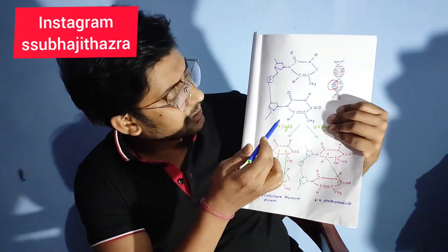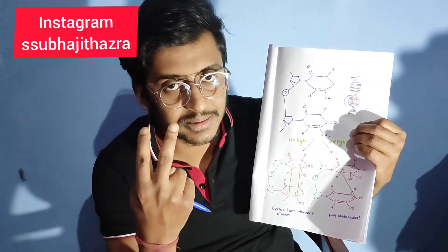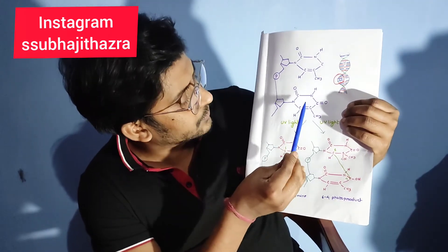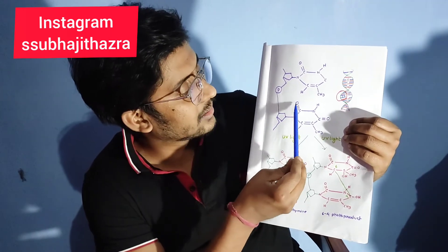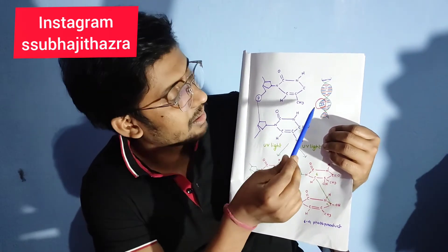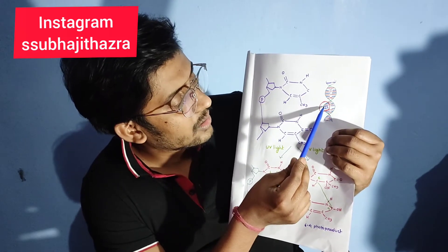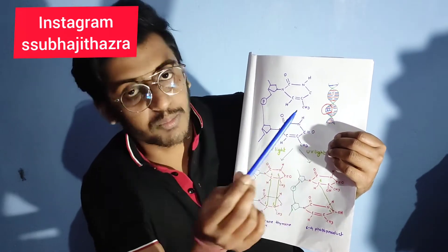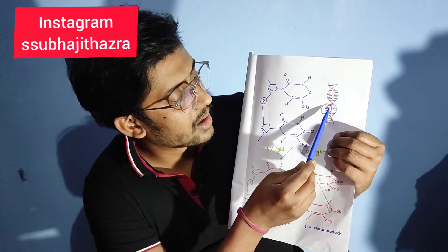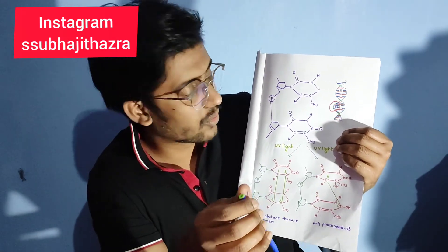This is the two-thymine structure. Because there are two pyrimidines — one is thymine and another is cytosine — as you can see in the structures of the DNA, the two thymines, or thymine and cytosine, attach to each other by a covalent bond and form a dimer.